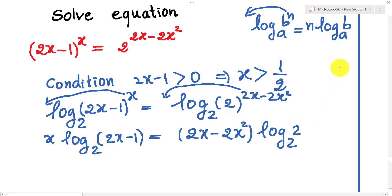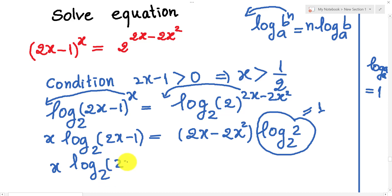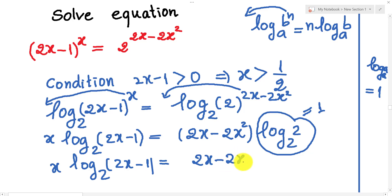We know that log base A of A equals 1, so log base 2 of 2 equals 1 and we don't need to write it. So the equation becomes: h times log base 2 of (2h minus 1) equals 2h minus 2h squared.